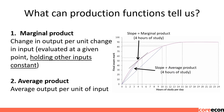What can production functions tell us? One thing is the idea of marginal product. When you hear the term marginal, think of one more. So marginal product means by how much the grade changes with one more hour of study. The marginal product is equal to the slope of the production function. For example, at 4 hours of study, the grade is 50, and at 5 hours of study, the grade is 57. So the marginal product is 57 minus 50, which is 7.